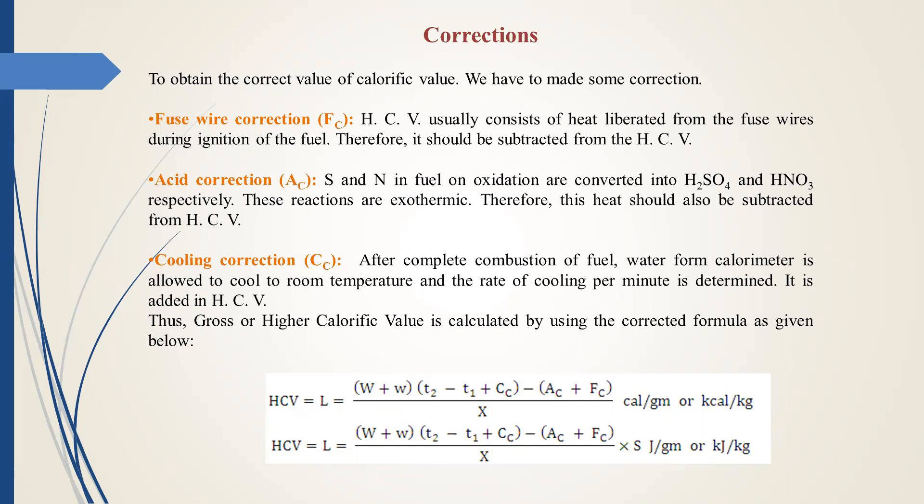Next one is acid correction. Sulfur and nitrogen in the fuel, if they are present and undergo oxidation, they are converted into acids like H2SO4 and HNO3 respectively. These reactions are exothermic. Therefore, this heat should be subtracted from high calorific value.